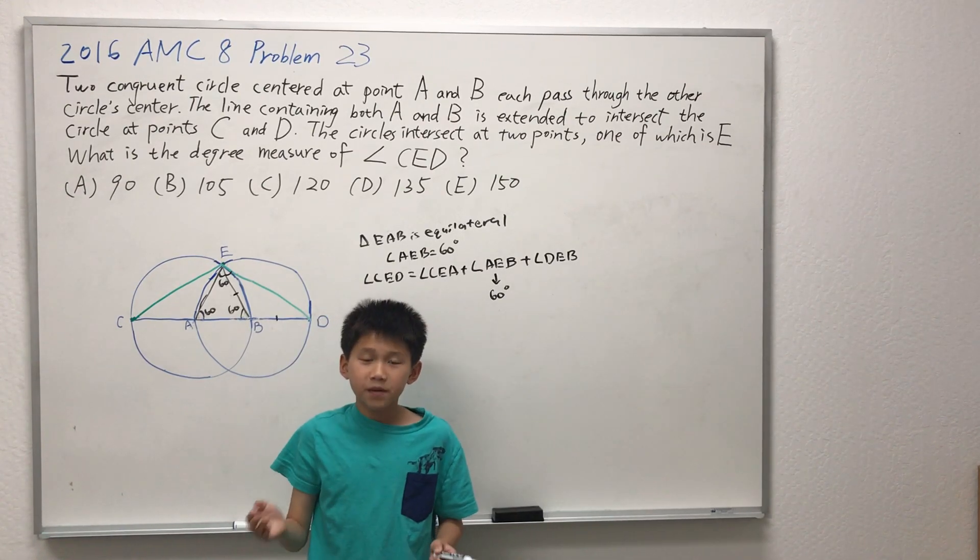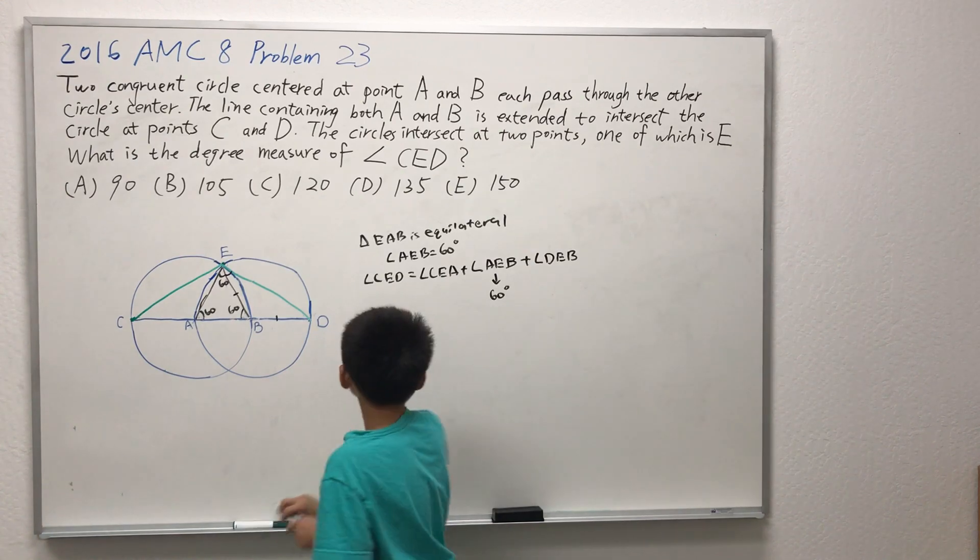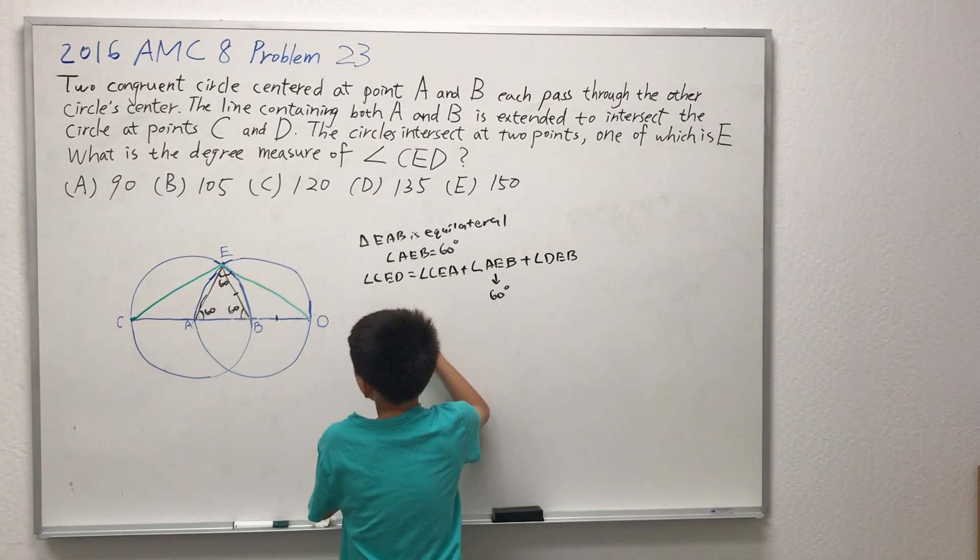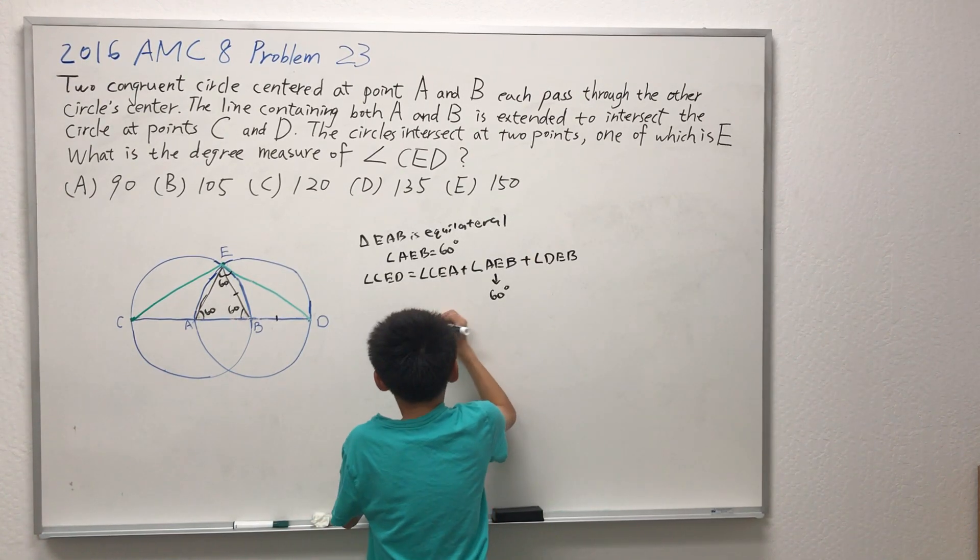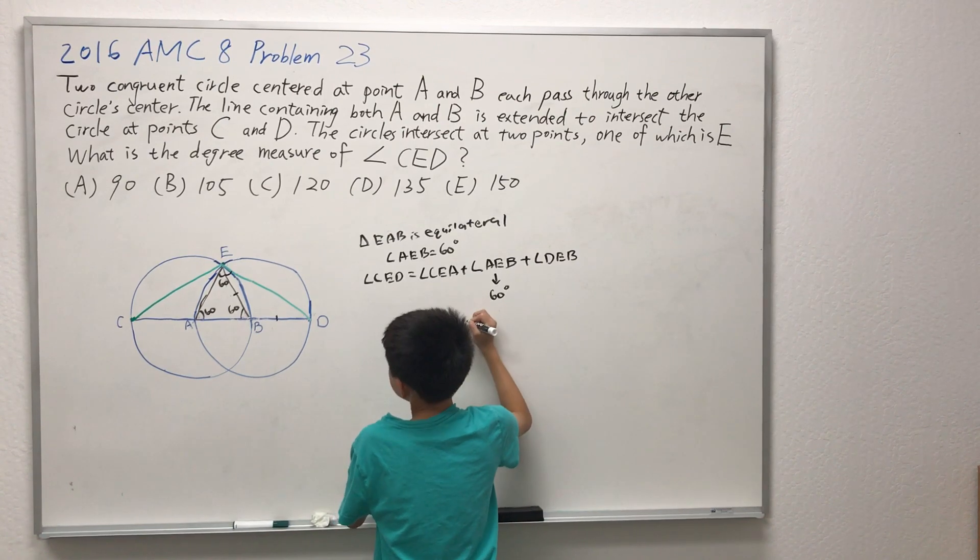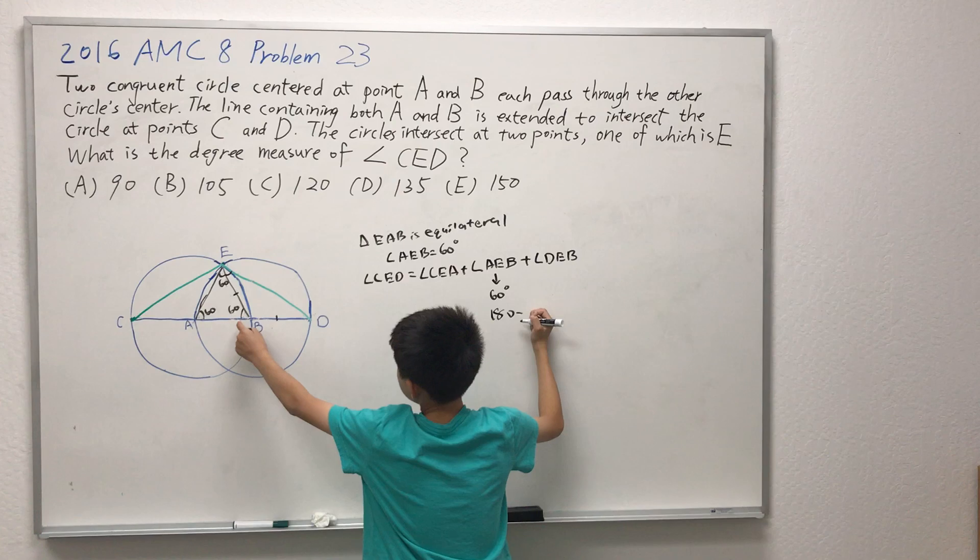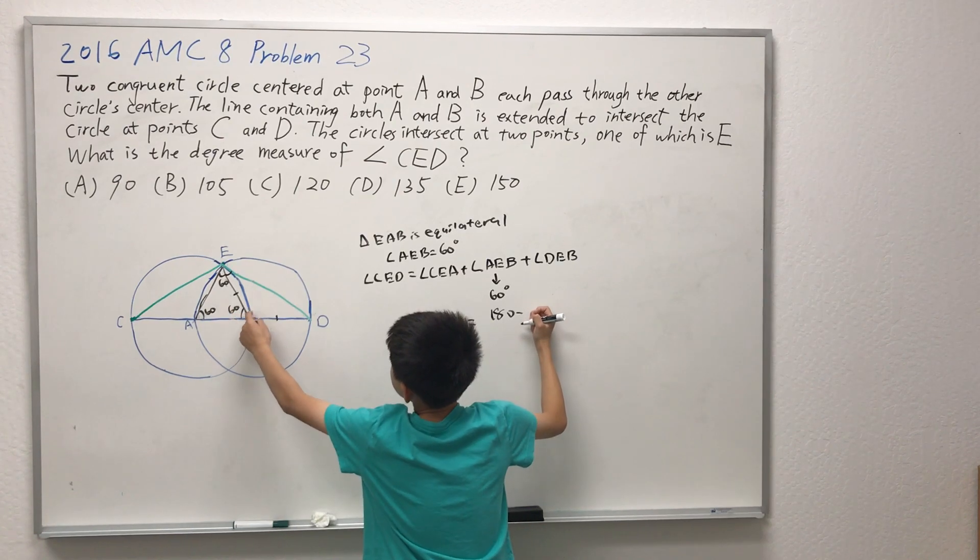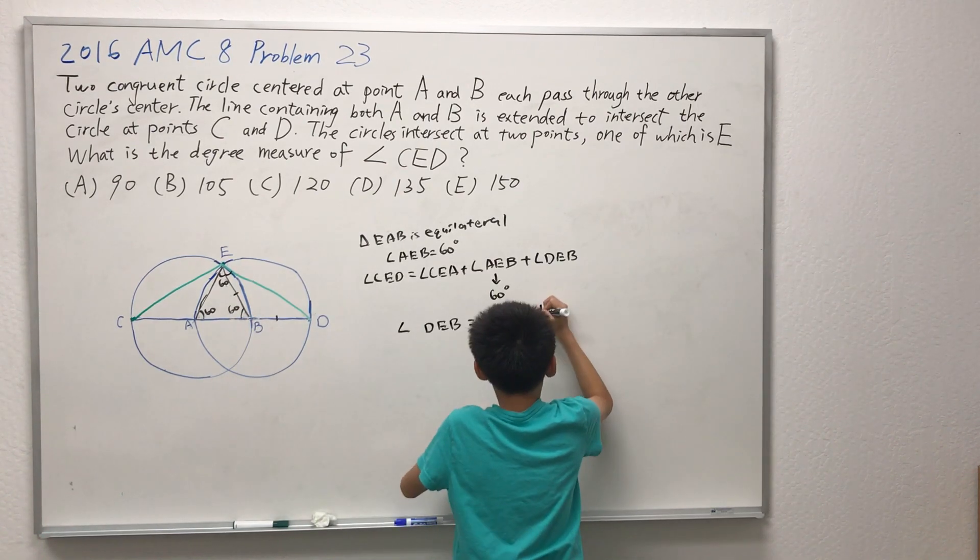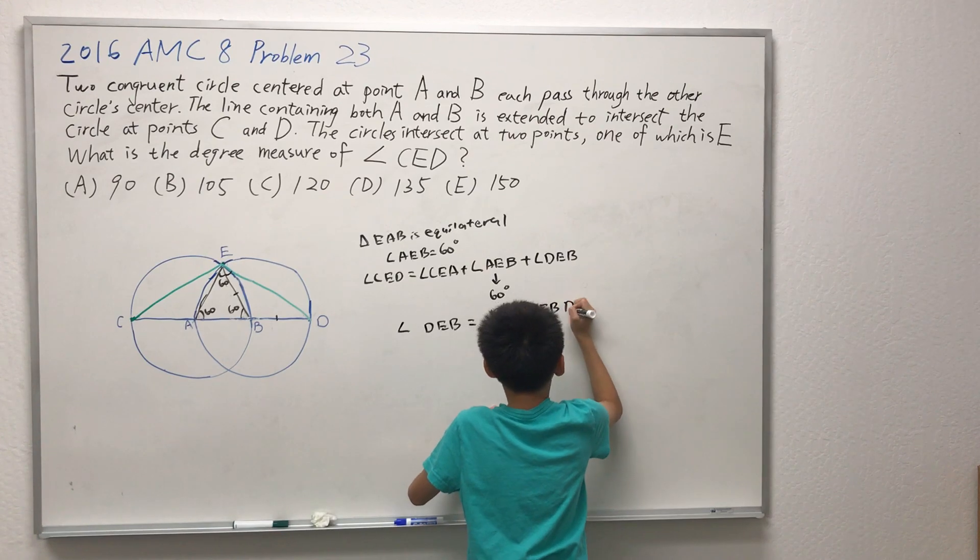This means that angle DEB is equal to 180 minus angle EBD, divided by 2.